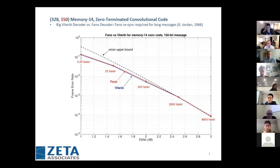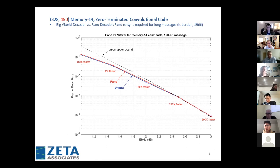Most simulations I could find didn't have short messages for Fano. I also ran into a 1966 paper by Jordan saying rethinking is required for long messages — they periodically insert zeros. But right now we're interested in Fano for short packets. I hope this speed result is as impressive to you as it is to me. I'll take 100 times faster any day.